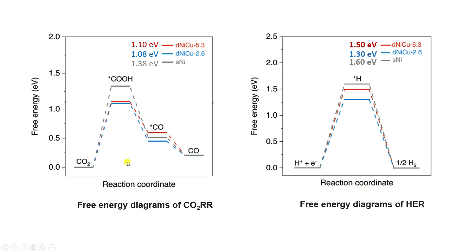This is the free energy profile for CO2 reduction. This is the free energy diagram of the hydrogen evolution reaction. The first step is CO2 takes one proton and electron to form COOH, then it takes one more electron and proton and releases a water molecule to form the adsorbed CO intermediate. Finally, CO desorbs to give the CO product plus H2O. This is a two-electron/two-proton reduction reaction.